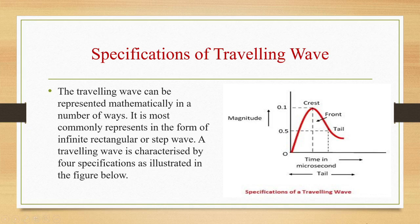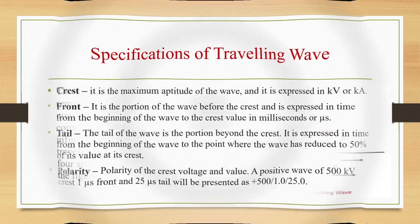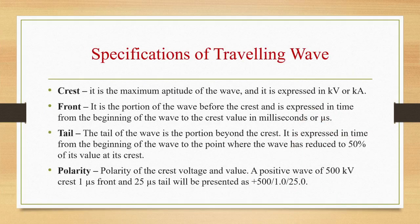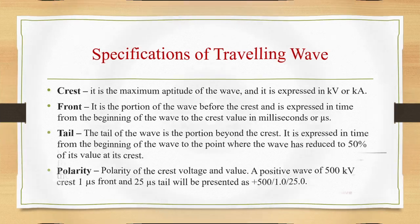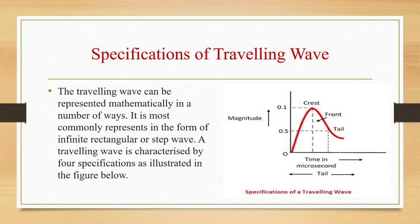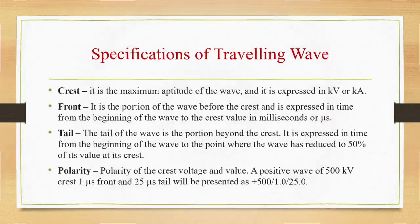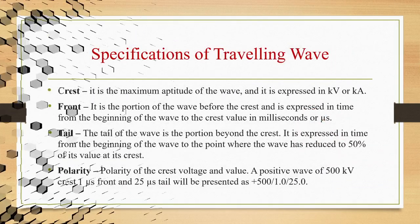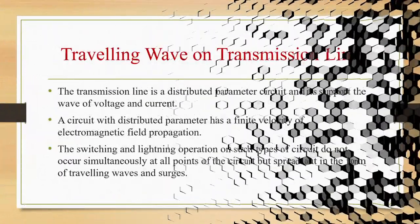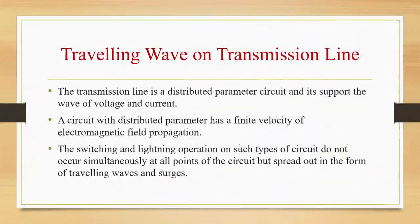Various specifications of a traveling wave: crest is the maximum amplitude of the wave; front is the portion of the wave before the crest; and tail is the portion beyond the crest. Polarity of crest voltage and value are determined by seeing the voltage, current, and time.